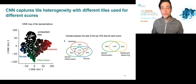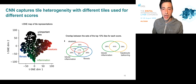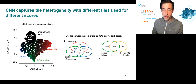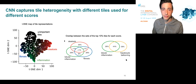We also assessed the overlap between the sets of the top 10% of tiles for each score. We observed very low overlap in the top tiles used for steatosis, lobular inflammation, and fibrosis, while we observed a much higher overlap between the top tiles used for lobular inflammation and hepatocyte ballooning.